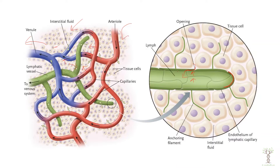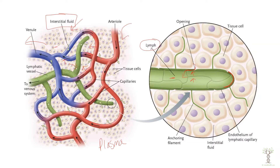Once fluid moves from the interstitial space into the lymphatic vessel, it is called lymph. When the fluid is in our capillaries it's called plasma, then it moves into the tissue and is called interstitial fluid, and once it moves into the lymphatic vessel it is called lymph. It is essentially the same fluid but with a different name depending on its location.